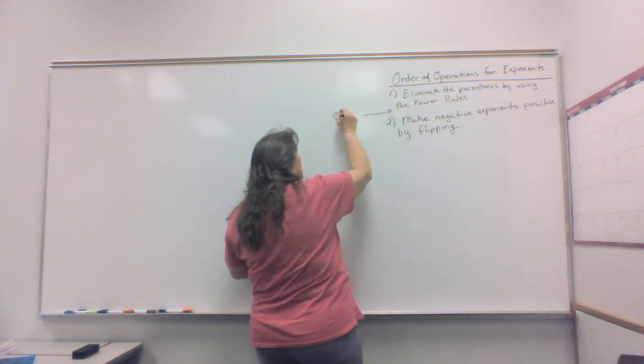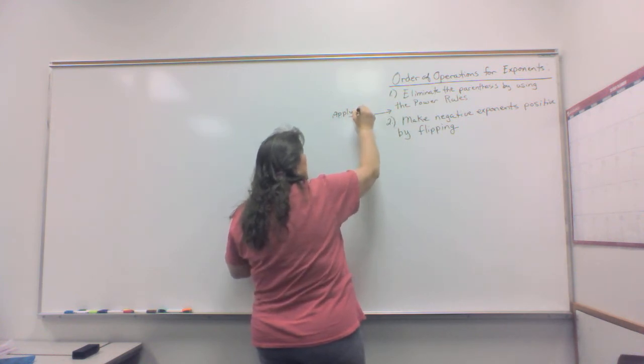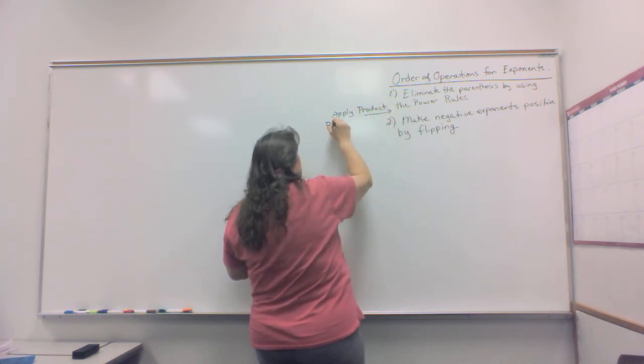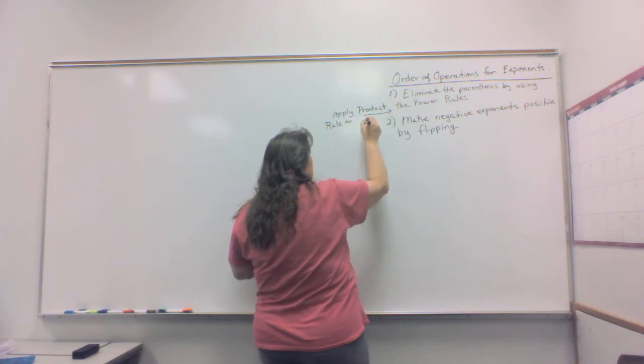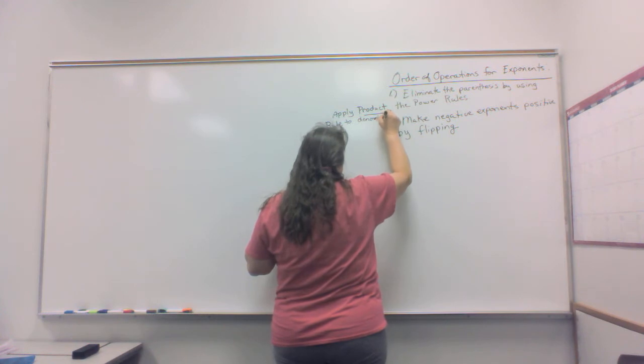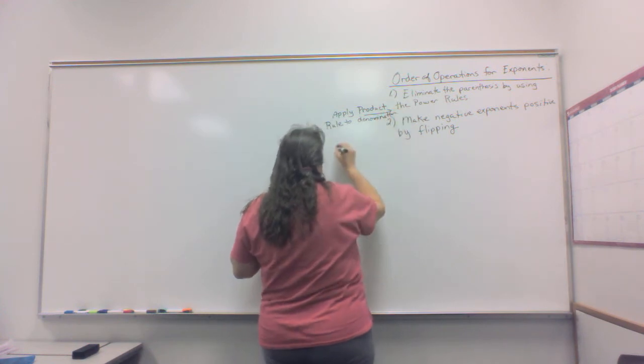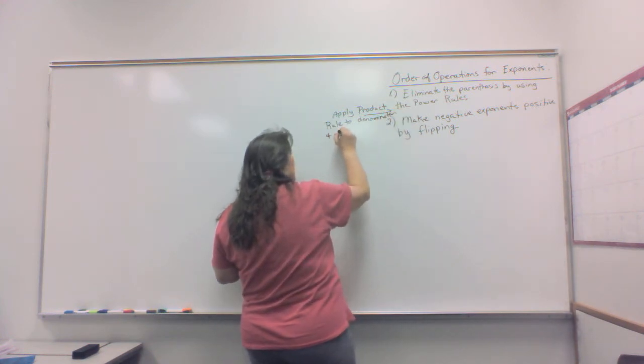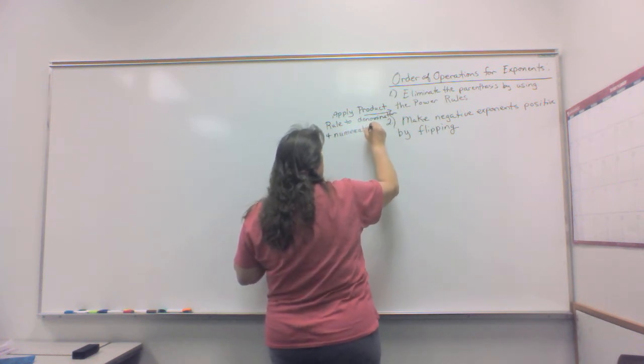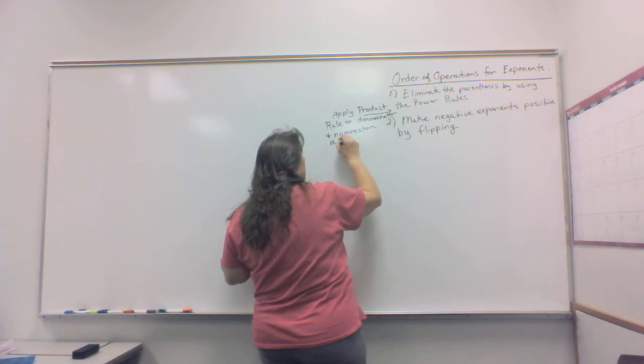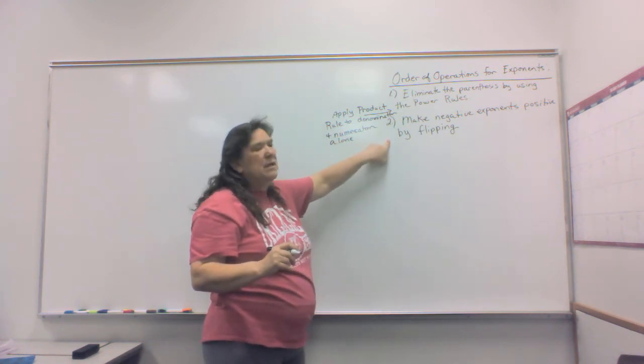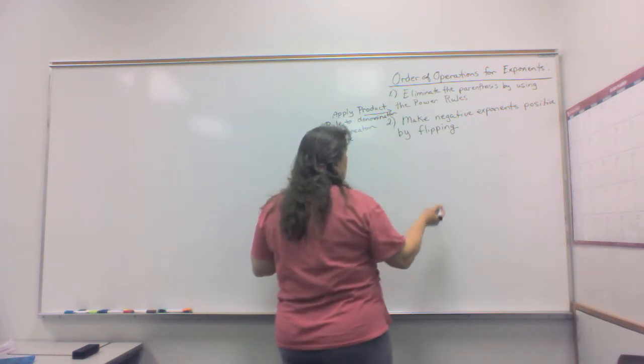Apply product rule to denominator and numerator alone. Then, if you have any negative exponents, make them positive by flipping.